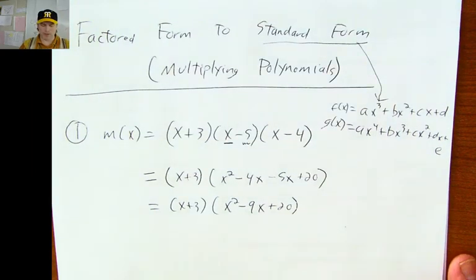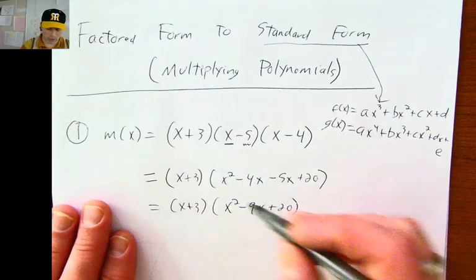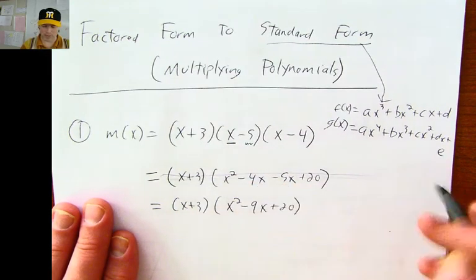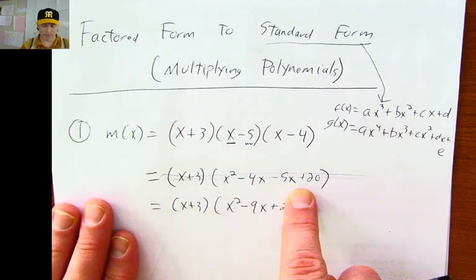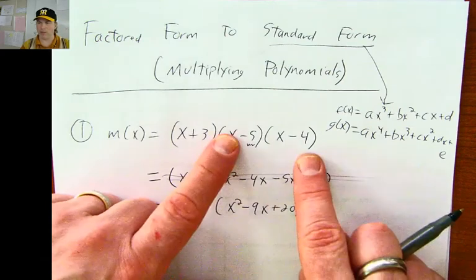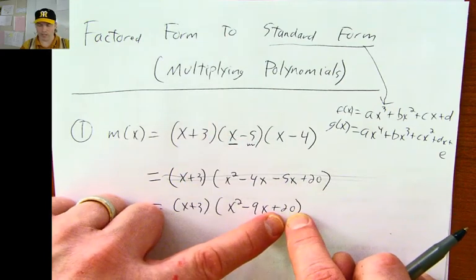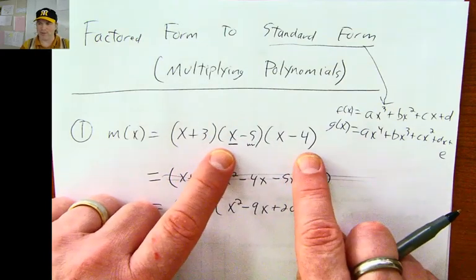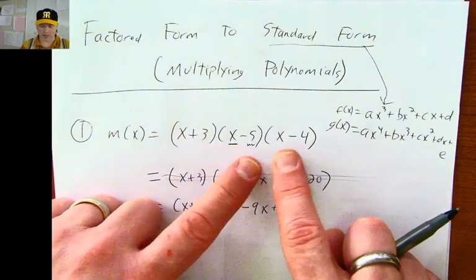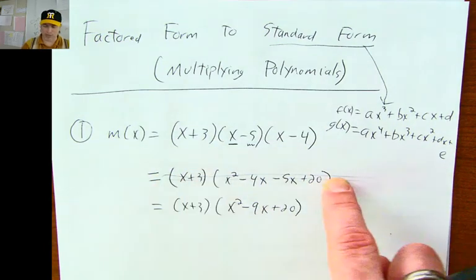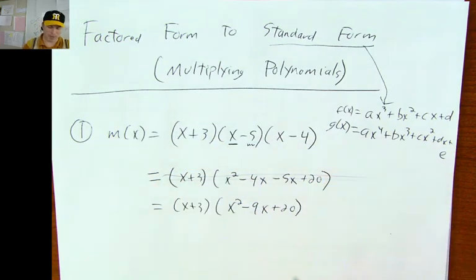It should be noted, I usually don't write this middle step — I usually do it in my head. I write the x squared, I write the positive twenty, the outers are negative four x and negative five x, which adds up to negative nine x. You don't need to write this middle step in my opinion.